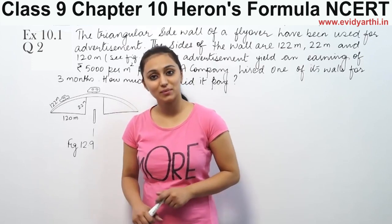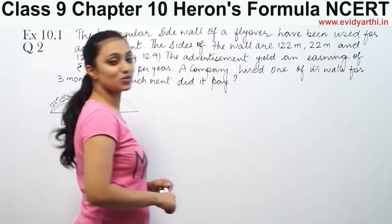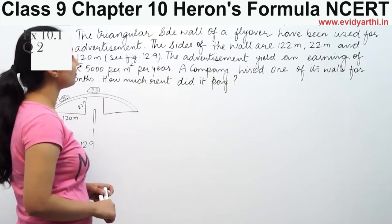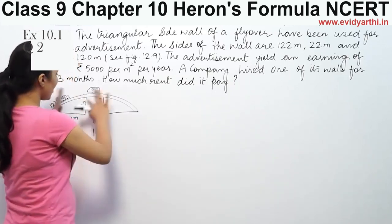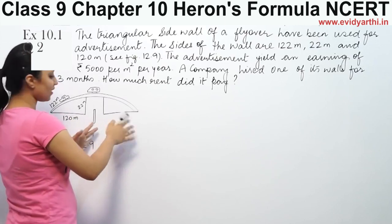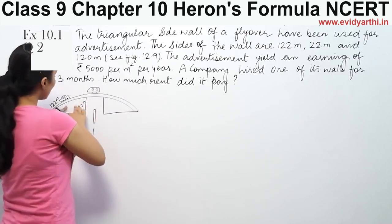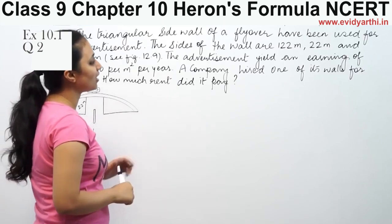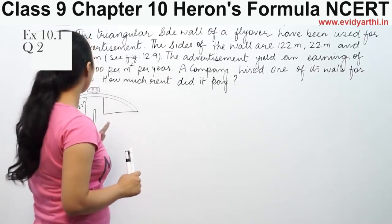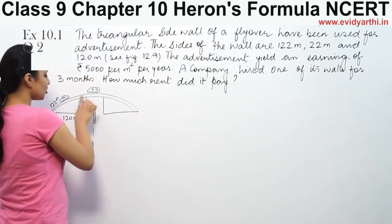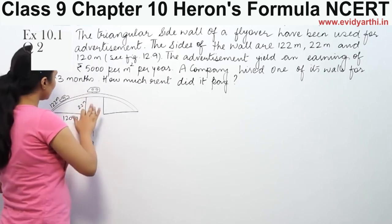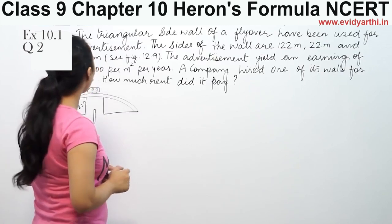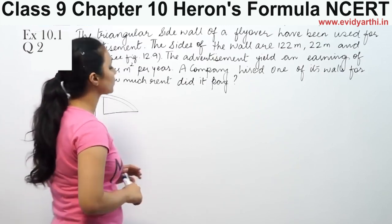This is question number 2 from exercise 12.1, page number 202 from NCERT. It says that triangular side walls of a flyover have been used for advertisement. The walls are triangular in shape. The sides of the walls are 122, 22, and 120 meters. The advertisement yields an earning of 5,000 rupees per meter square per year.